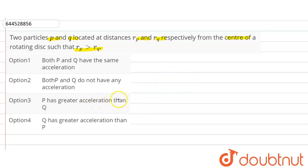So we know acceleration a is equal to omega square into r. So here omega of P is equal to omega of Q, and here rp is greater than rq.